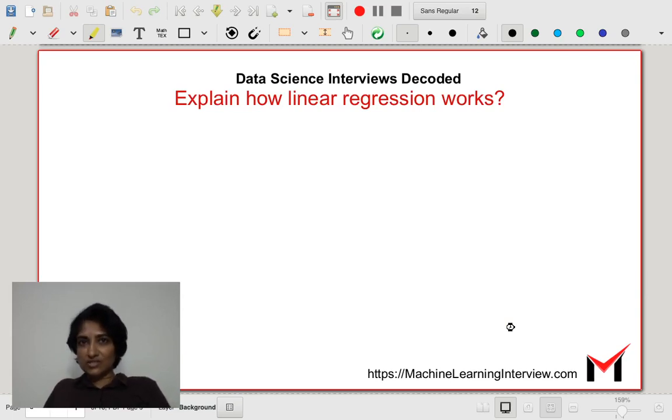Explain how linear regression works. Linear regression is a machine learning model to predict continuous variables based on a set of features that we have. So it is used when the target variable is continuous.